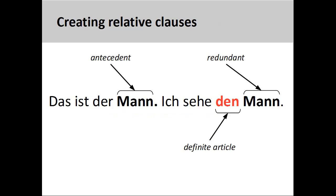By means of a relative pronoun and clause, you can join two sentences together that stand on their own but have some related component. For example, both sentences you see on the screen — "das ist der Mann" (that is the man) and "ich sehe den Mann" (I see the man) — are complete sentences and make perfect sense by themselves. I can use the one shared element that both sentences have, "man," as the hinge for joining these two sentences together. I accomplish this by using the first element as the antecedent and removing the redundant element in the second sentence. What functions here as a definite article will then be put into service as a relative pronoun.